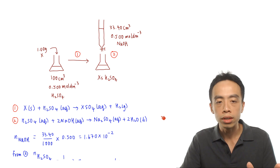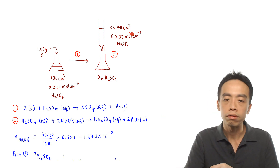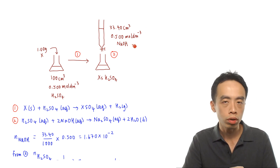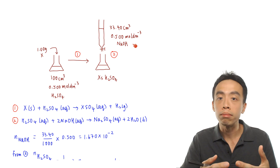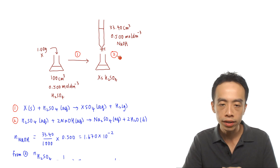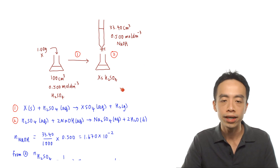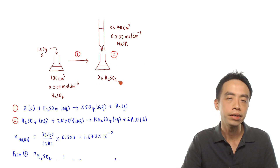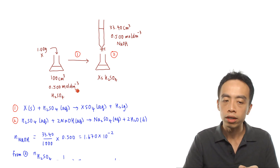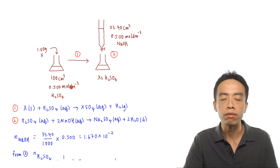Once we have all this information, we work backwards. Starting with the volume and concentration of sodium hydroxide, I can determine the moles of NaOH, then using the mole ratio from the second reaction, I can determine the moles of H₂SO₄ that is in excess inside the conical flask. I know the total moles of H₂SO₄ added because I have its volume and concentration.